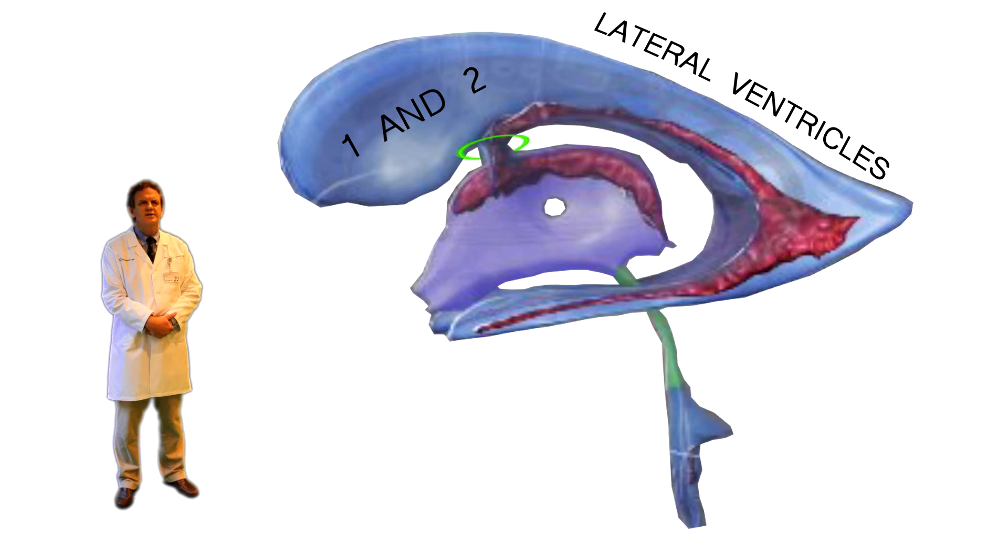There is a hole connecting the lateral ventricles to the third ventricle located here. The scientific name for this type of hole is foramen, and thus this hole is named the foramen of Monroe. It is also known as the interventricular foramen.